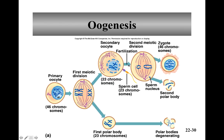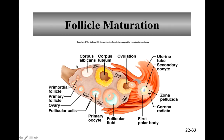The secondary oocyte needs all those organelles so that when it's fertilized, the egg will have something to grow with. Because for fertilization, the sperm really only brings its chromosomes — it's not going to bring anything else. It's just the sperm showing up with its chromosomes. So the secondary oocyte really has to have all the stuff to begin life.